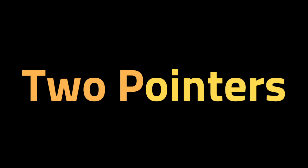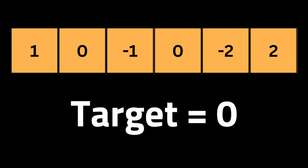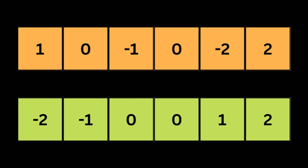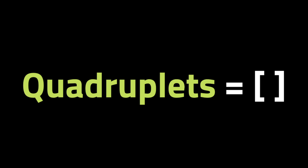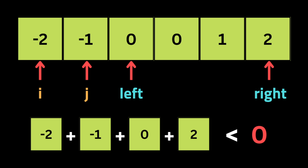To solve this problem we're going to use the two pointers technique. For example, let's say we have this list of integers and a target equal to zero. The two pointers technique is applied only when the list is sorted, so the first thing we're going to do is sort the input list. Then we're going to create a quadruplets array that will be the output, where we store the four numbers that sum up to the target.